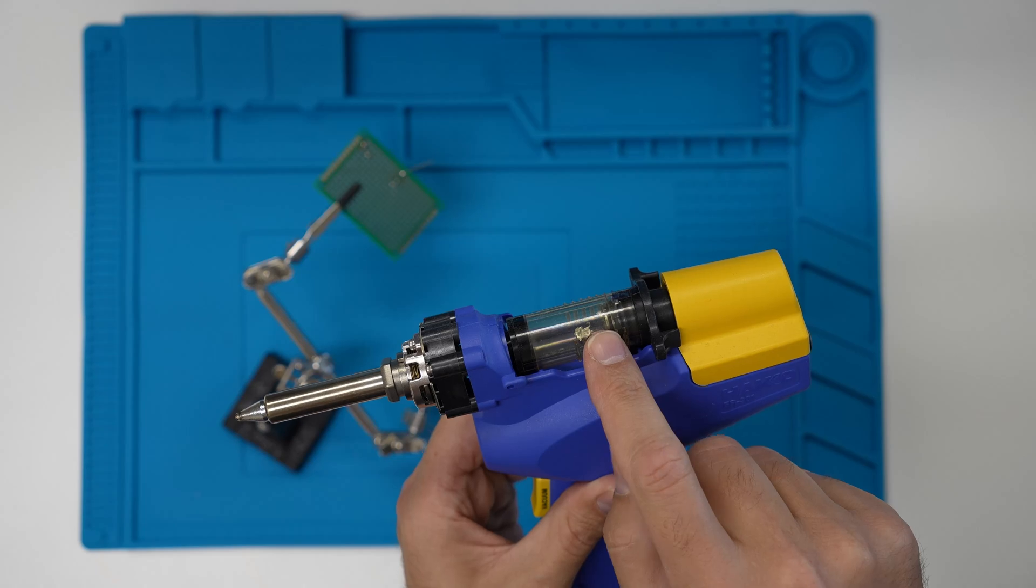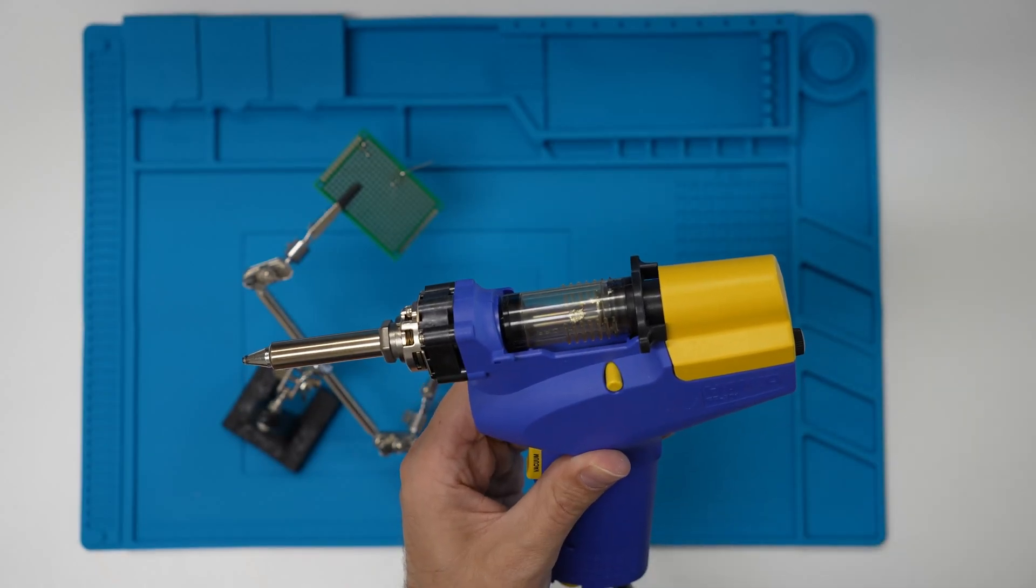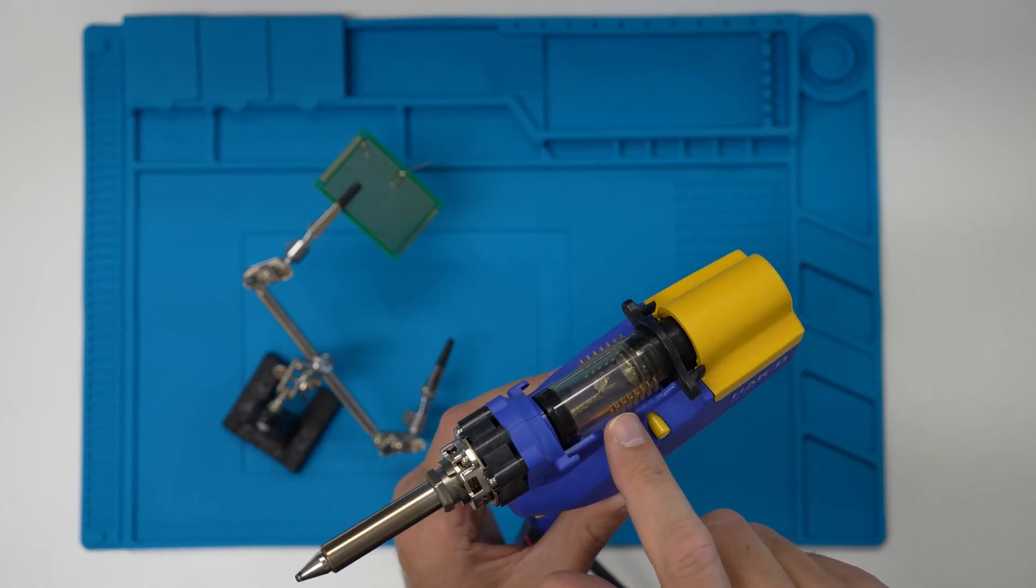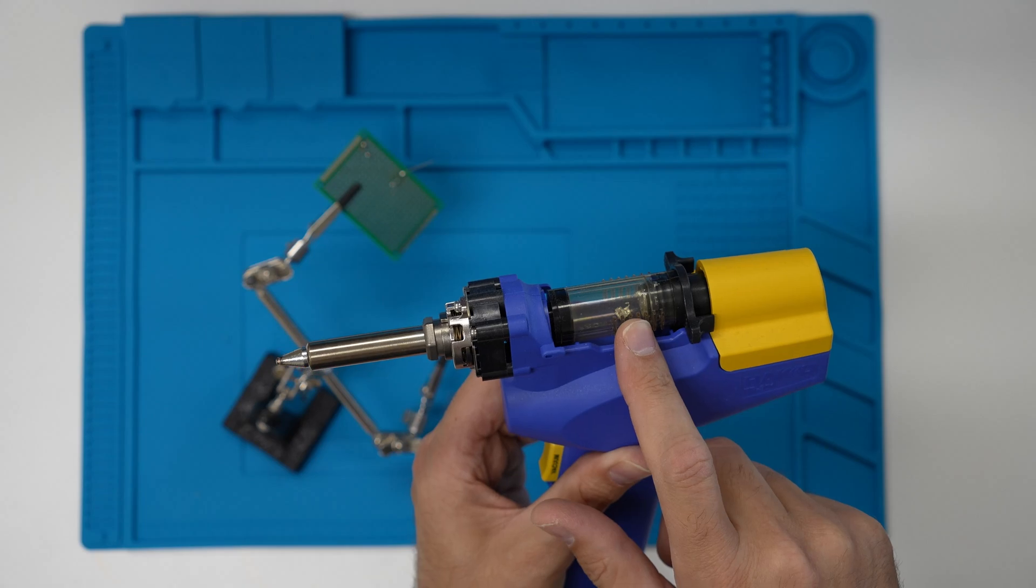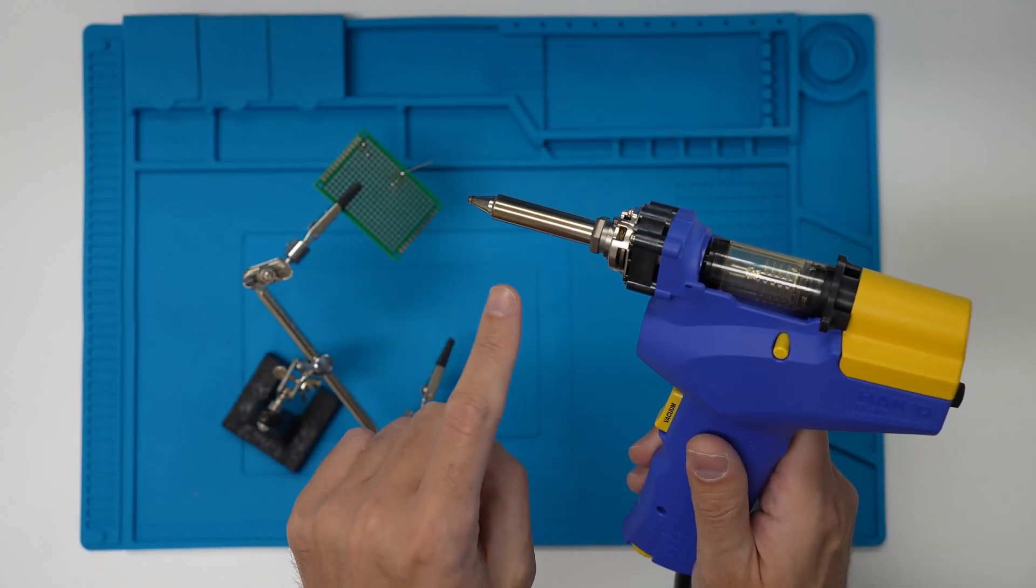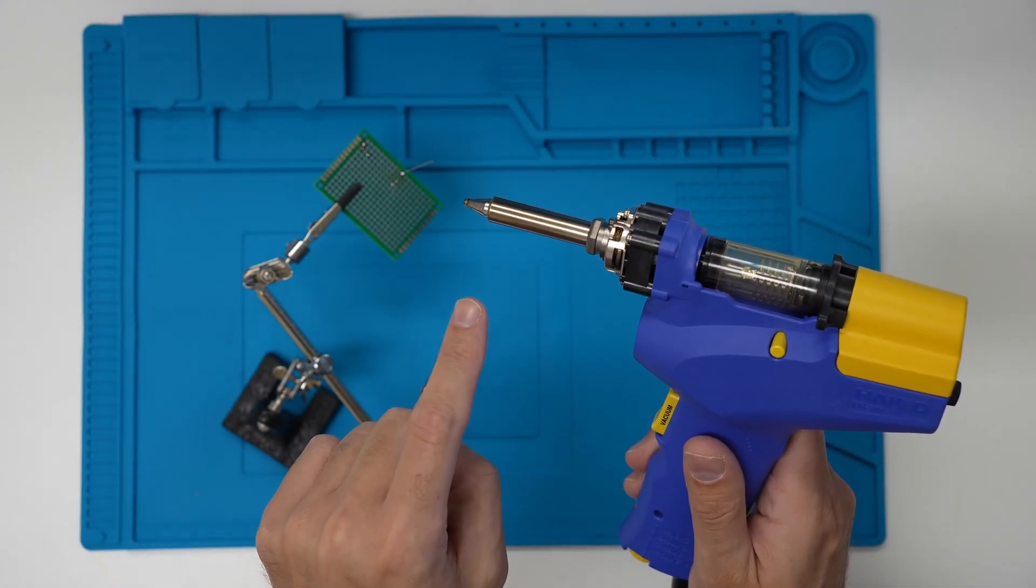So how can we go about cleaning this? Obviously I haven't used this a lot, so this part I think is quite okay. You can take this apart if you have a lot of solder in here, but I think the issue is more with the tip. So let's have a look at how to clean the tip.